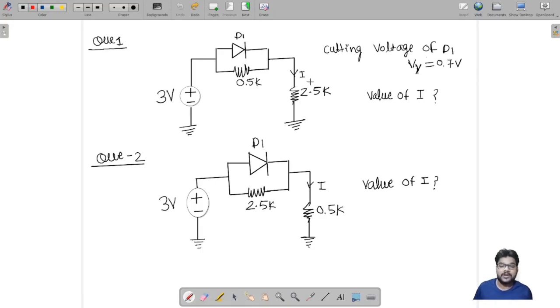The question says we have to find out a current i flowing in 2.5 kilo ohm resistor. In this circuit we have a 3 volt battery connected here, one diode is connected there, diode is having cuttin voltage 0.7 volt and another resistor 0.5 kilo ohm is connected there.